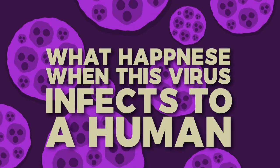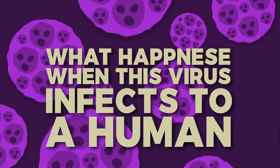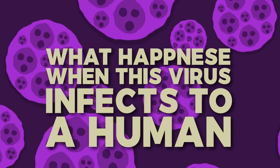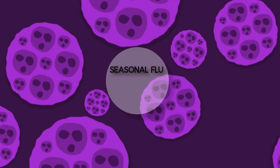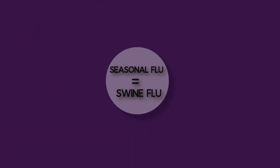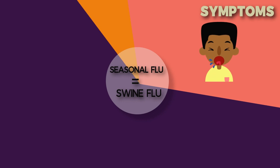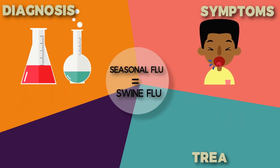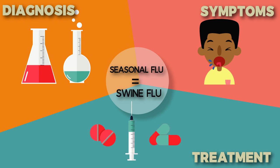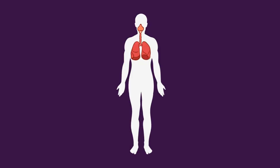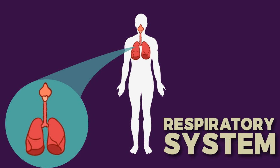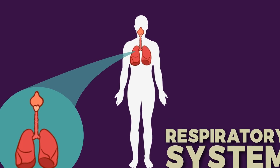This is how swine flu evolved, but what happens when this virus infects a human? H1N1 virus is like ordinary seasonal flu — it has the same symptoms, almost the same diagnosis, and the same treatment. But if it remains untreated it becomes dangerous. When the human body gets infected by H1N1, it mostly starts affecting the respiratory system — the ventilation system of the human body.